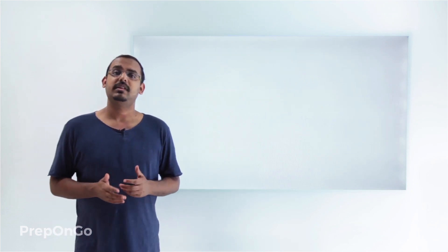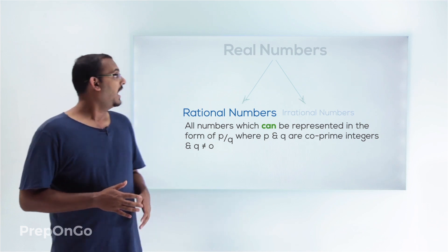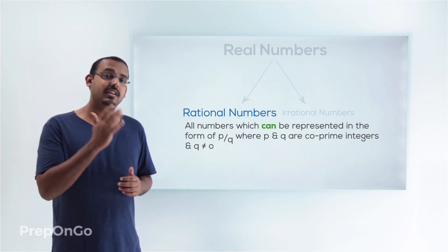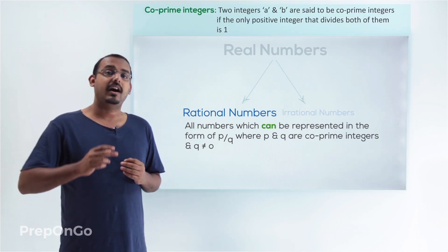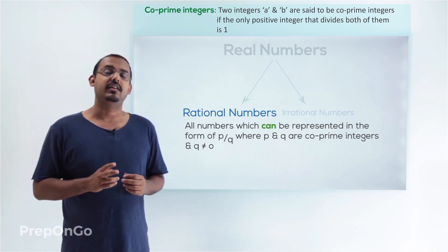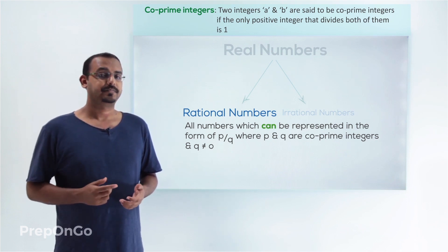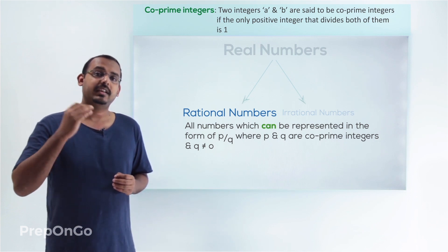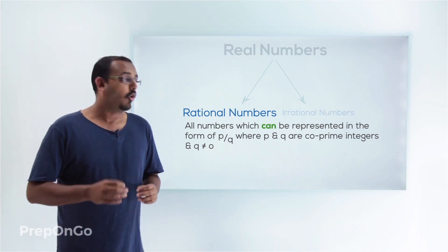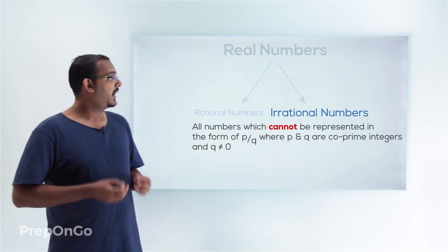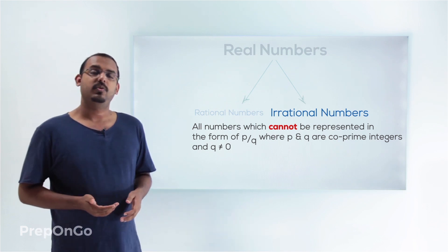Moving on, there are two more categories of numbers — rational numbers and irrational numbers. Rational numbers are all the numbers which can be represented as P by Q, where P and Q are both co-prime integers and Q is not equal to 0. Co-prime integers are two numbers which do not have any other common factor than 1 — for example, 10 and 13 are co-prime numbers. Any number which cannot be represented in the form P by Q, where P and Q are co-prime integers and Q is not equal to 0, is called an irrational number.